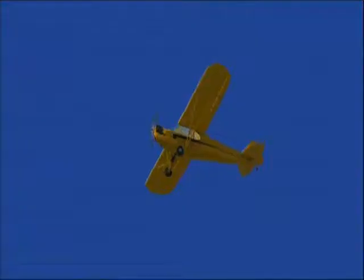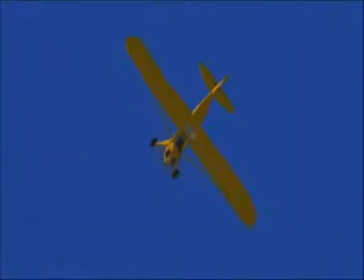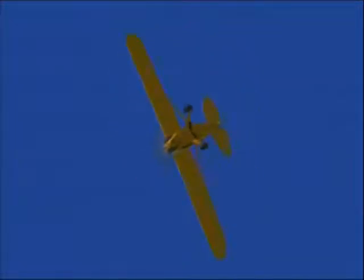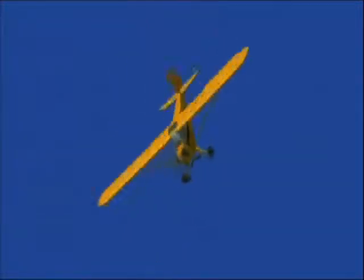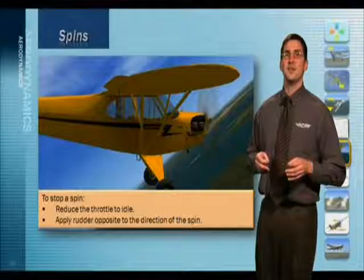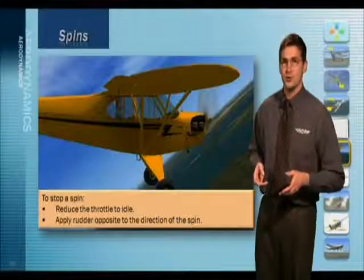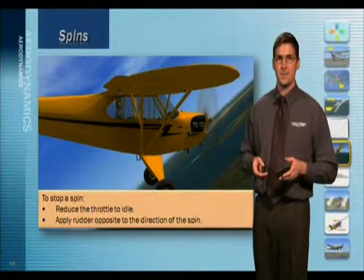As the spin becomes fully developed, its path resembles a spiral turn as the plane rapidly descends. You can stop a spin by reducing the angle of attack, which in turn allows the wings to start producing lift again.